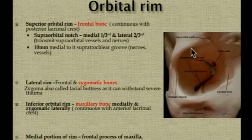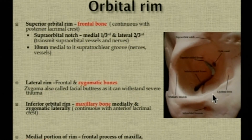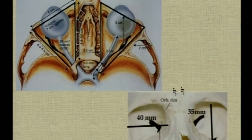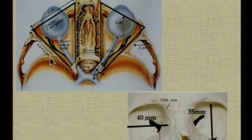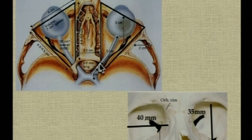The superior orbital rim is formed by the frontal bone and is continuous with the posterior lacrimal crest. The lateral orbital rim above is formed by the frontal bone and below by the zygomatic bone. The inferior rim laterally is formed by the zygomatic bone and medially by the maxillary bone, and the medial portion of the rim is formed by the maxillary bone and the lacrimal bone. At the orbital entrance, dimensions are 40 mm horizontally and 35 mm vertically. The lateral orbital rim to apex is 4 to 4.5 cm, and the anterior lacrimal crest to orbital apex is 4.4 to 5 cm. The two medial walls are parallel, 2.5 cm apart. The lateral orbital walls form a 90-degree angle to each other, and the entire orbital volume is 30 cubic centimeters.